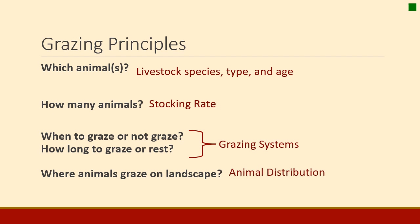And then finally, animal distribution — that's where animals graze on a landscape. Not surprisingly, animals don't graze landscapes evenly all the way across. They have their sort of favorite places that they like to graze and rest. Those are behavioral characteristics that we'll talk about in animal behavior. It's difficult to manage animal distribution, but it sure can be done, so we'll talk about that later.